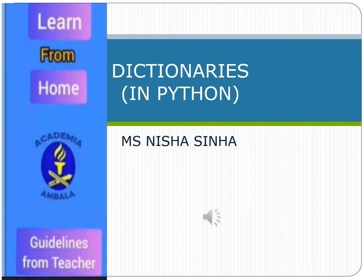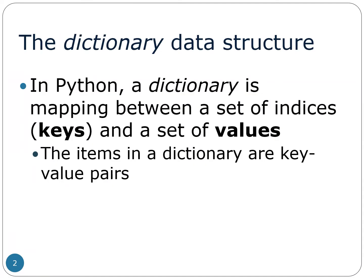Today's topic is dictionary in Python. In Python we can create sequential data — that is your list and tuple. Similarly, there is another data type which is your set data type, where we can store values under a specific variable or key. That is known as a dictionary. So we are going to introduce Python dictionary here.